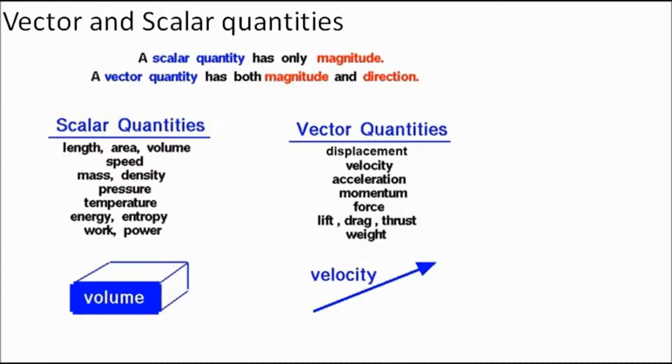A vector quantity has a magnitude as well, but it also has a direction. So for example, 20 meters per second north. 20 meters per second, that's your magnitude. North, that's your direction. So these vector quantities here, they don't only have a size, they also have a direction.